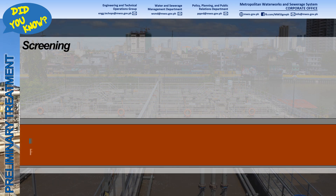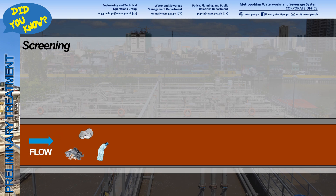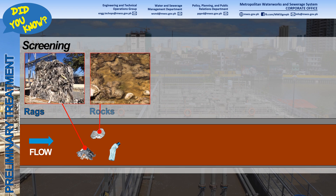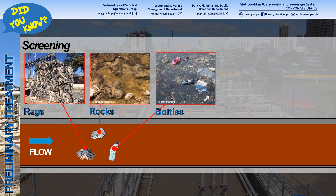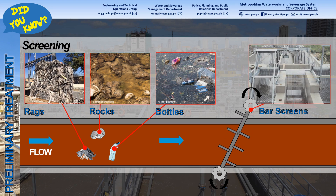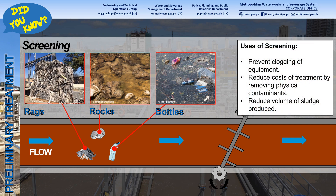Preliminary treatment begins with screening. When raw wastewater enters the system, it contains floating debris and garbage such as rags, rocks, and bottles. These debris need to be removed to prevent damaging the equipment for other processes. Bar screens are used to remove them and are often made of equally spaced metal bars with mechanical scrapers.